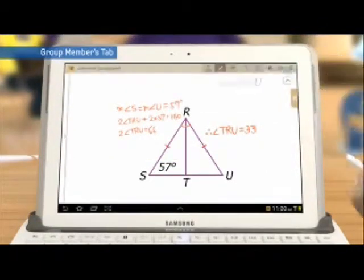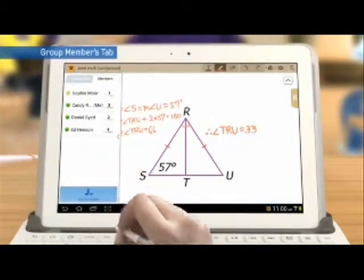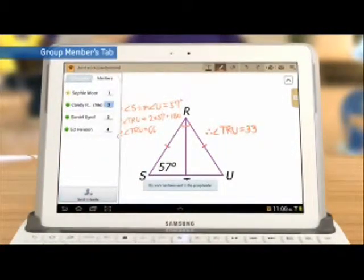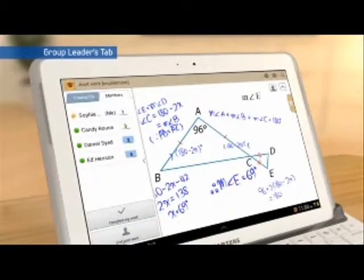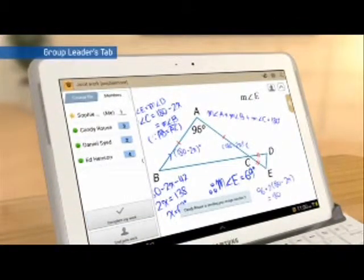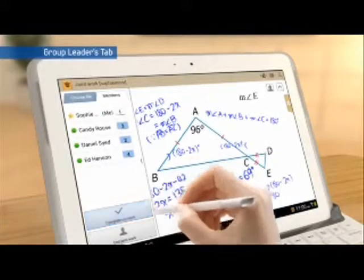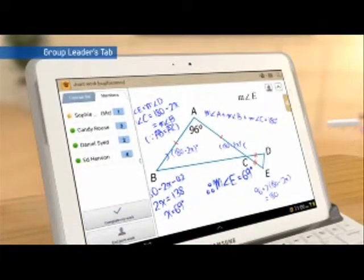Group members who complete the group activity submit the result to the group leaders. Then the leader submits it to the instructor by touching the End Joint Work button.